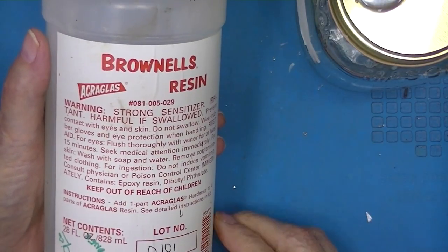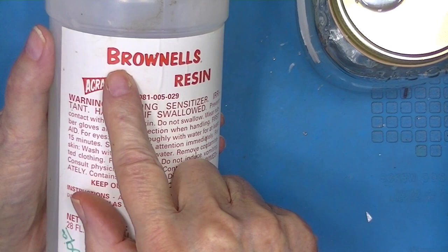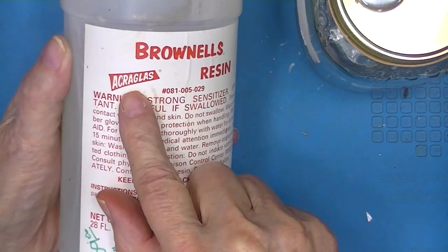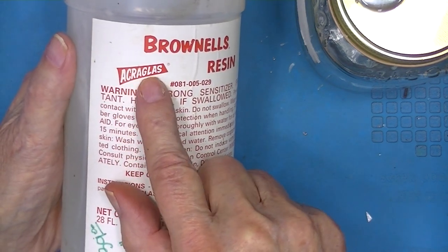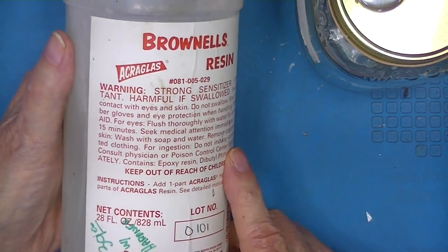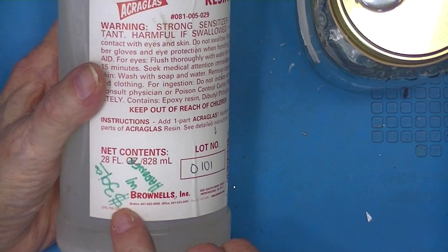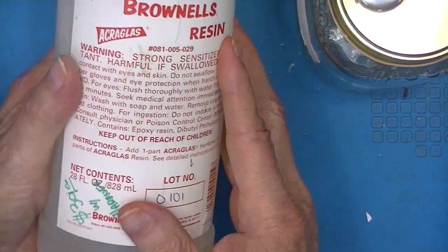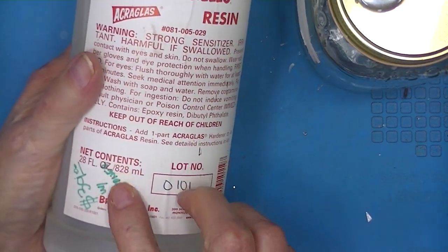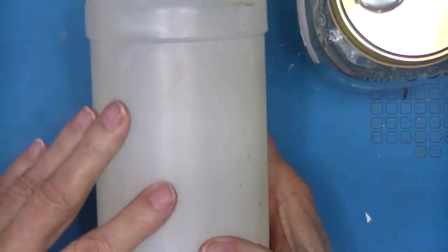The epoxy resin I use, I bought through Brownells. Their trade name is Acryglass. And although this might be 20 years old, I made a note it was $40. It came with enough hardener to take care of this entire volume.